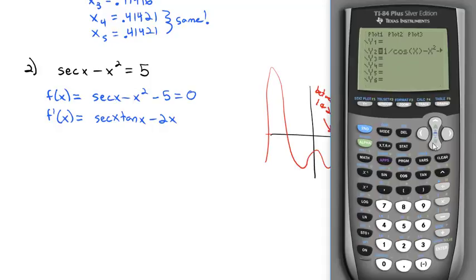So in our y equals, y3 is the derivative. The derivative is secant x, which is 1 over the cosine of x, times the tangent of x minus 2x. Then again in y1 we're going to type in x minus the second function, yvars function 2 at our x point, divided by our derivative function which is in the third function, vars yvars function 3.